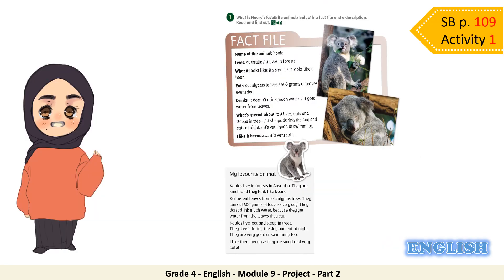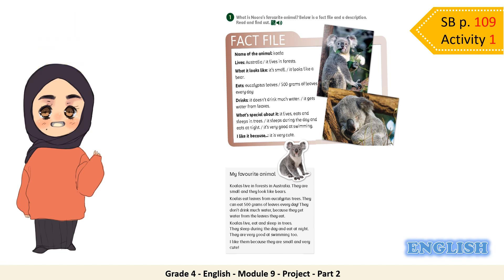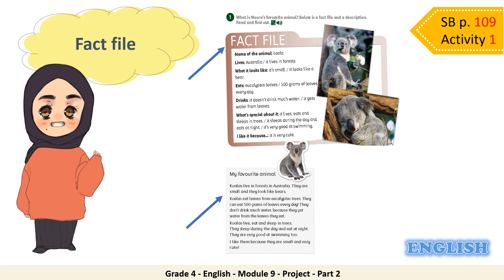Now, please open your student books on page 109, activity number 1. It's time to recall what we took in the previous lesson. As you remember, we read a fact file in the previous lesson about the koala. A fact file is like a short report of all the most important information on one thing. Then we read a paragraph written by Noora about her favorite animal, and she took the information from the fact file.